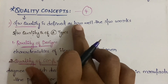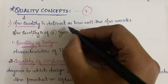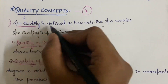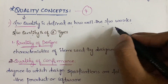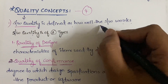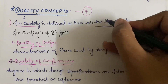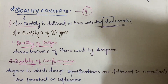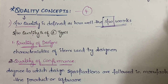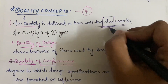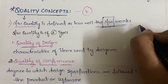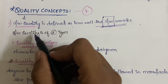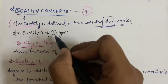The first one is software quality. Software quality is defined as how well the software works — that is, whatever software we have produced, whether that software is working well or not.